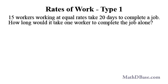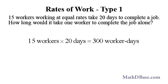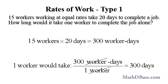Fifteen workers working at equal rates take 20 days to complete a job. How long would it take one worker to complete the job alone? Since all workers perform at the same rate, it would take 15 times as long for one worker. Fifteen workers times 20 days equals 300 worker days, so it would take one worker 300 days to do the job alone.